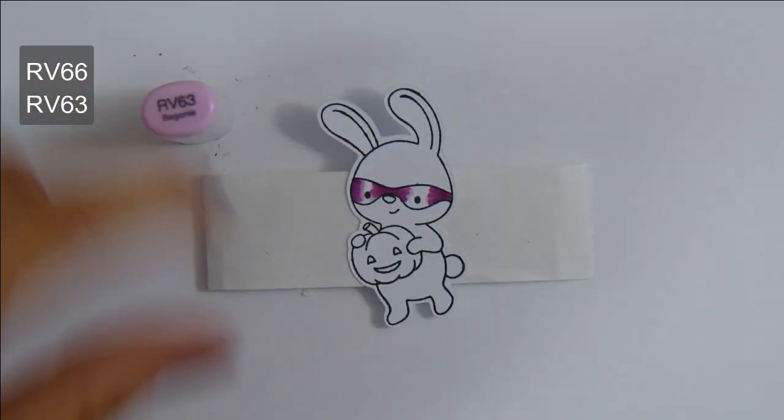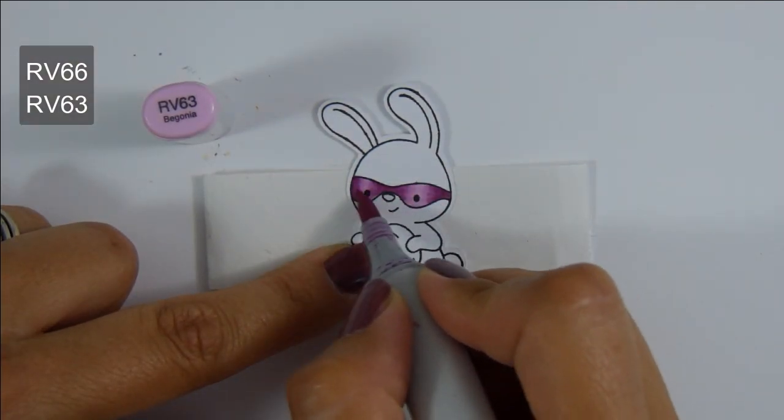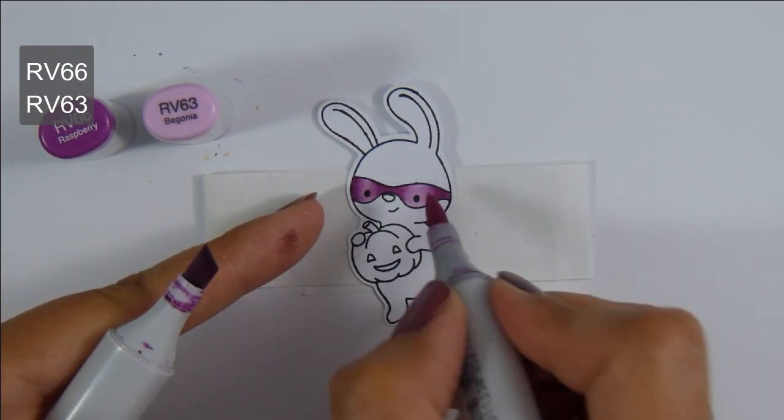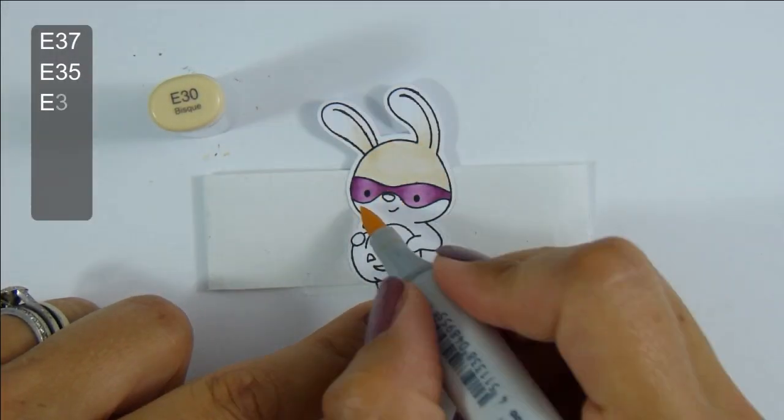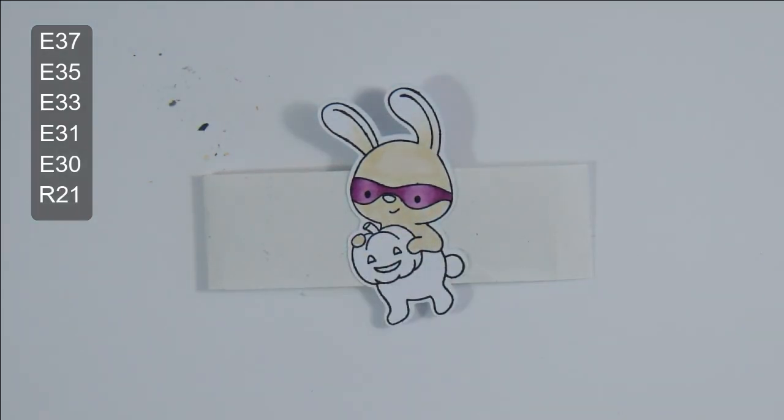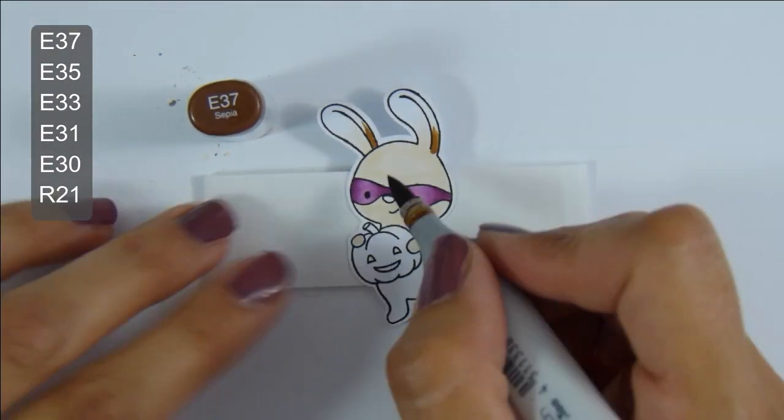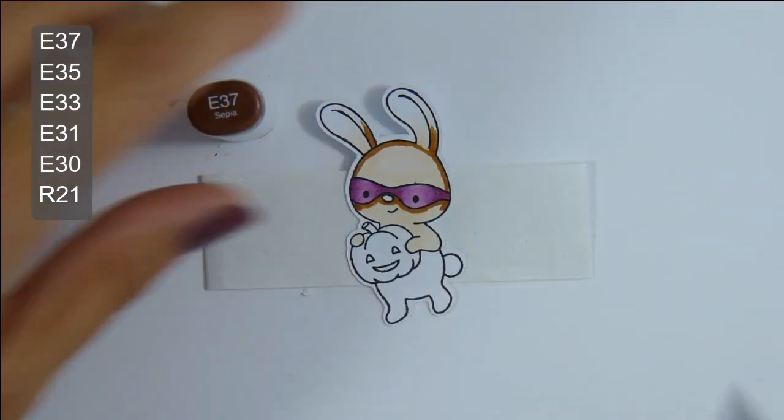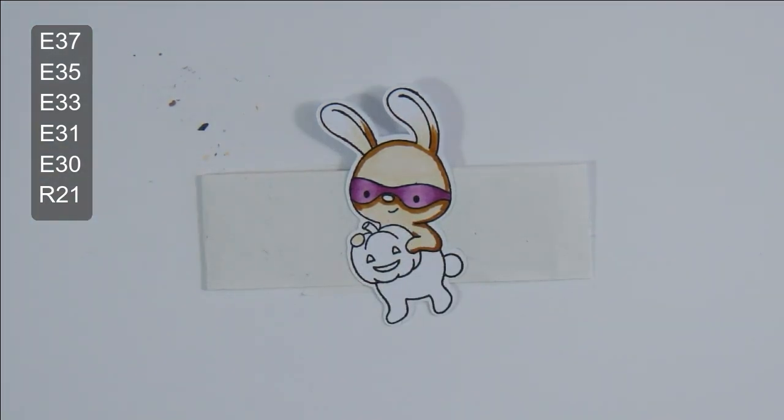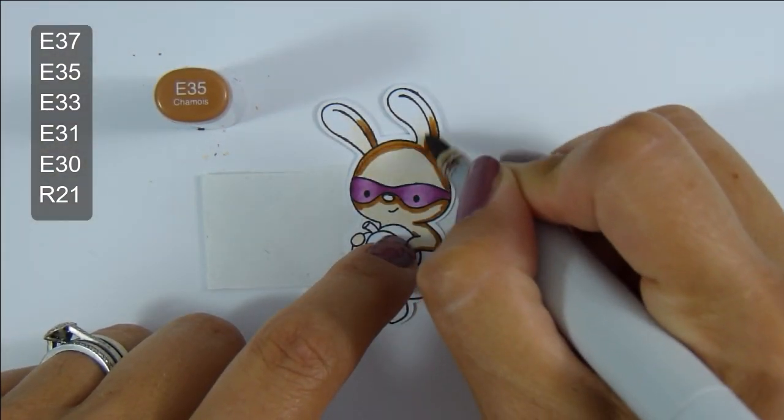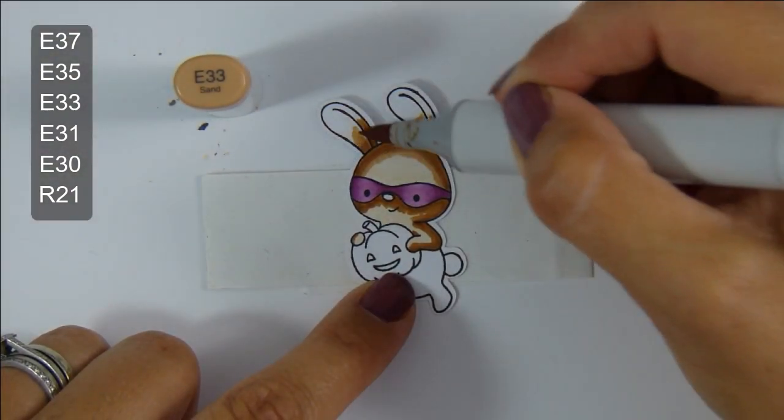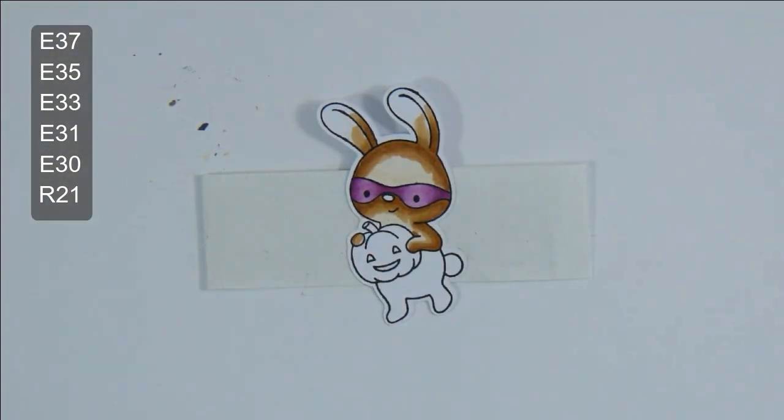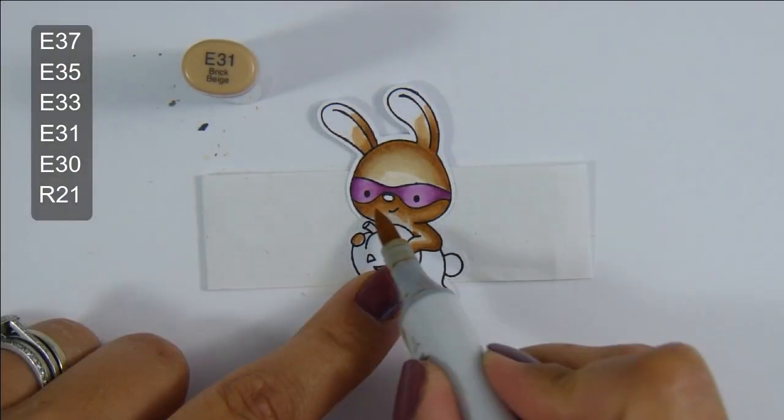I do use the tip-to-tip method here because my colors weren't blending quite as nicely as I would have liked, and my bunny did start to look quite dark with this E37. But as you'll see, as we move back down through the colors down to the E31 and E30, it does soften that color and lighten it up quite a lot.